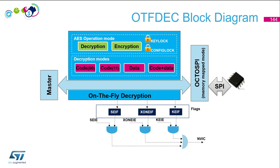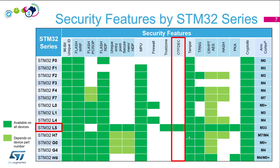The last error is the key error, which occurs when you try to encrypt or decrypt while the key registers are not properly set. Flags are available for these events and they will generate an interrupt. Regarding availability across the STM32 family, this IP is only available on the STM32L5.